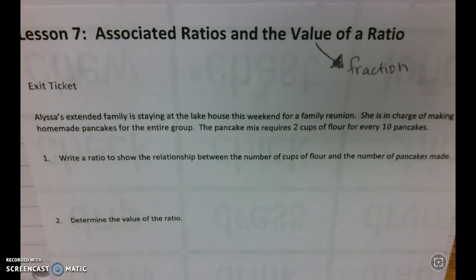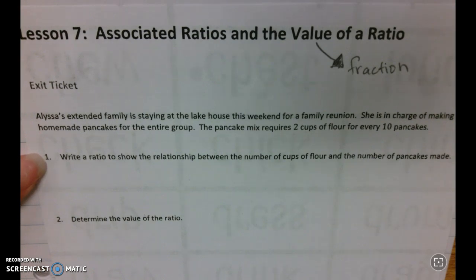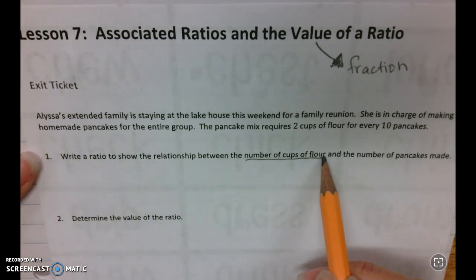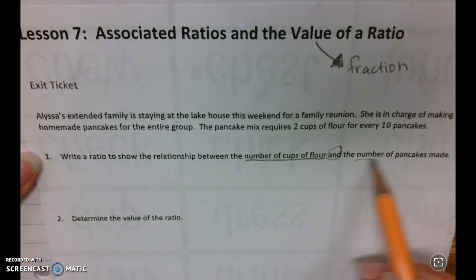Number one, they want us to write a ratio to show the relationship between the number of cups of flour and the number of pancakes made. We're going to go in the order of the words, so we need the number of cups of flour compared to the number of pancakes made.